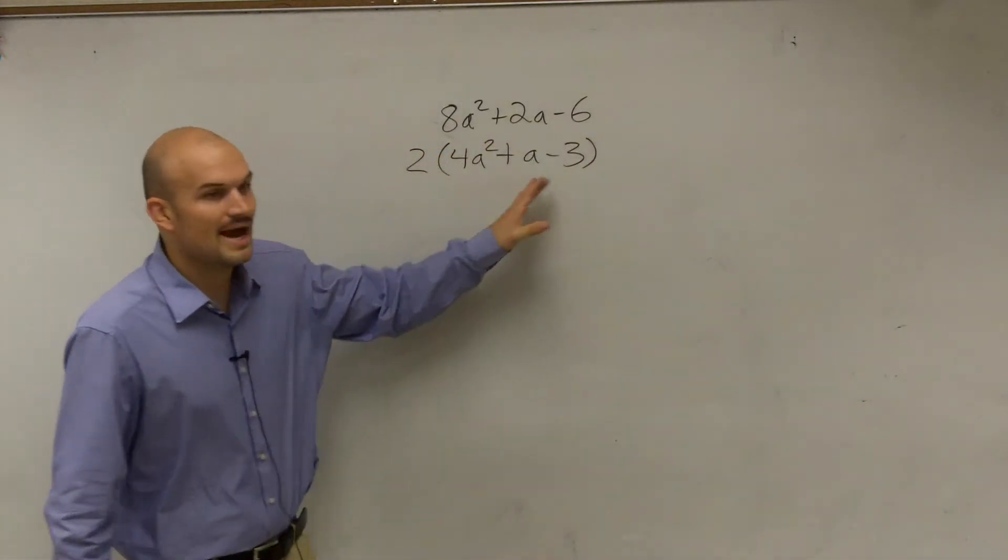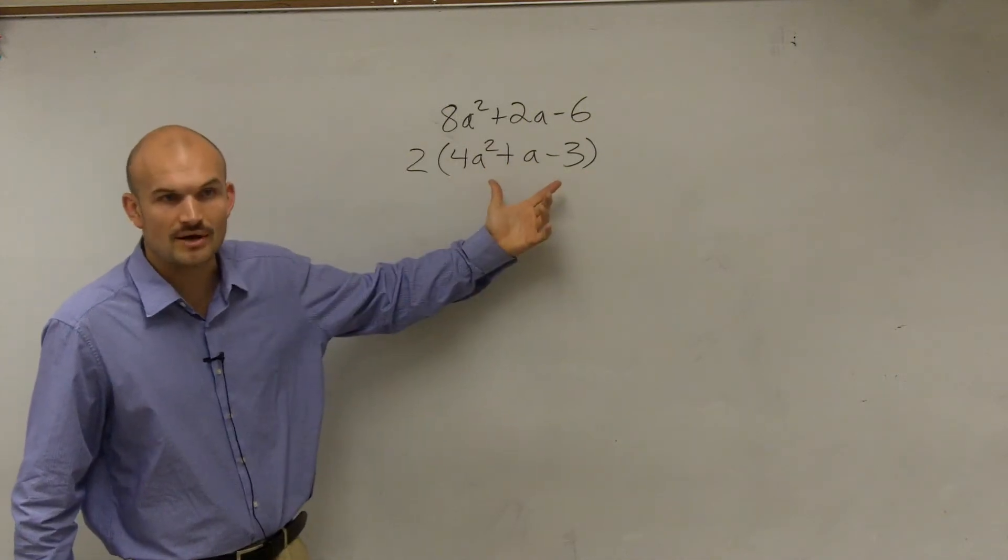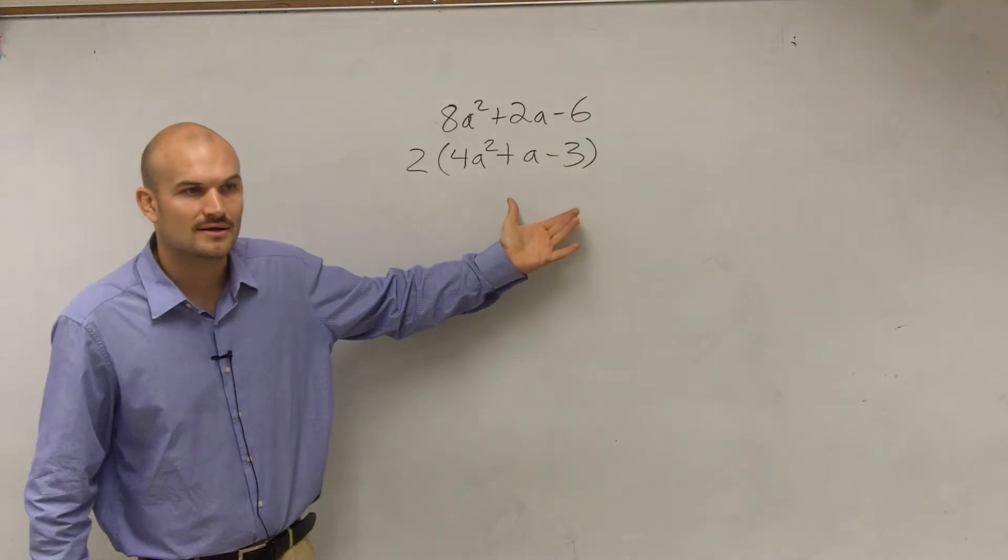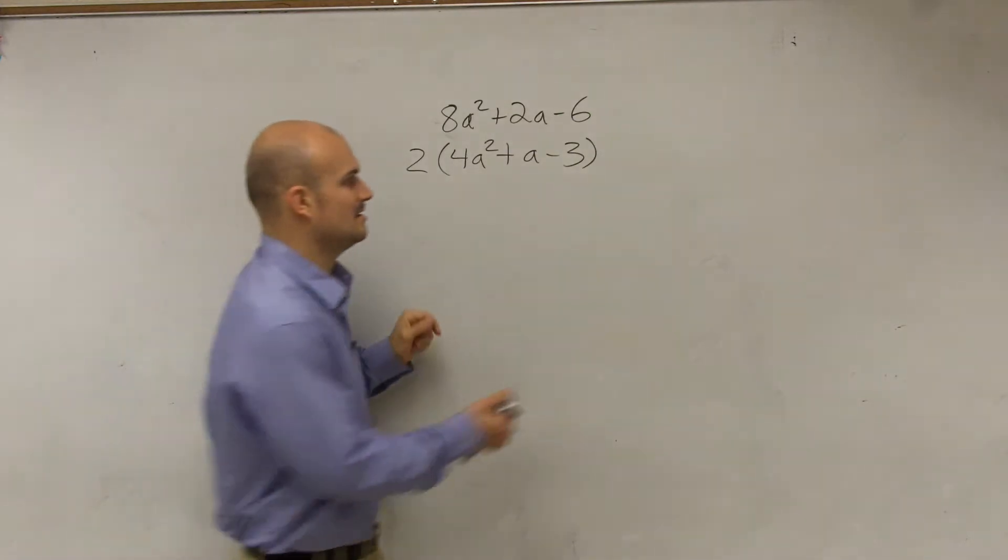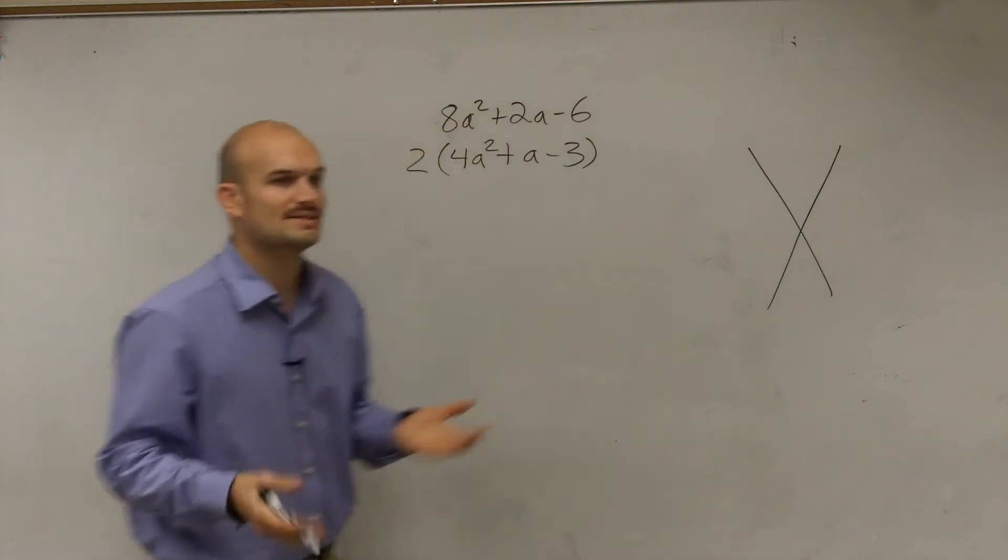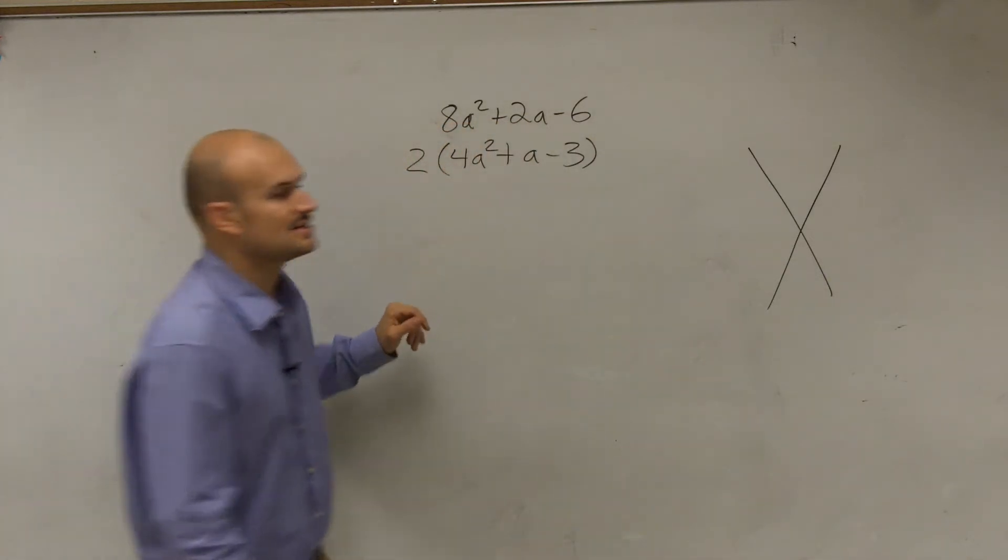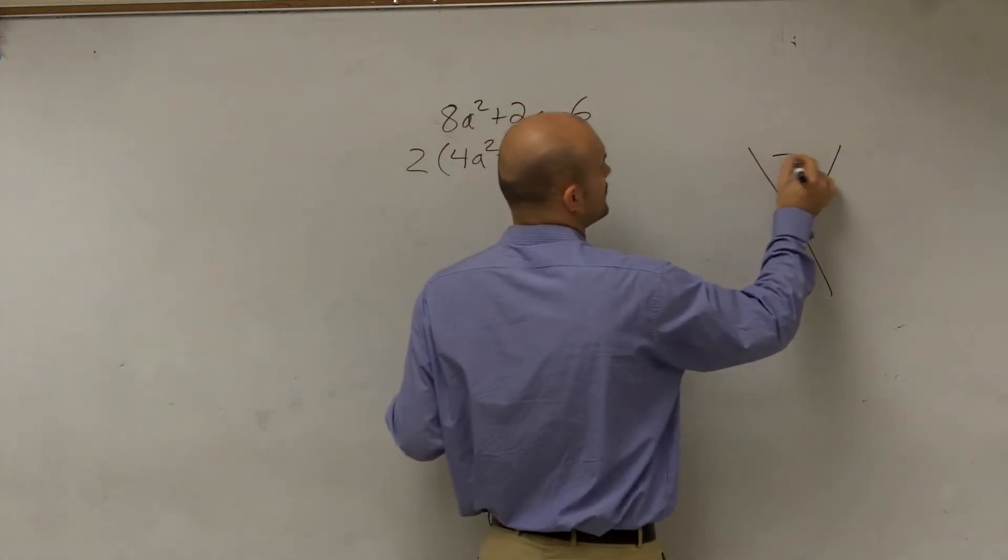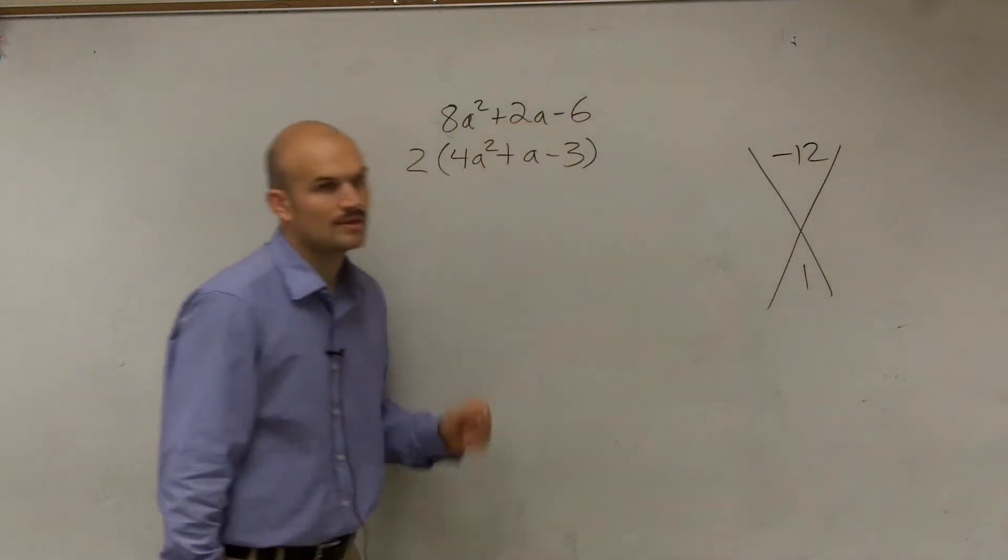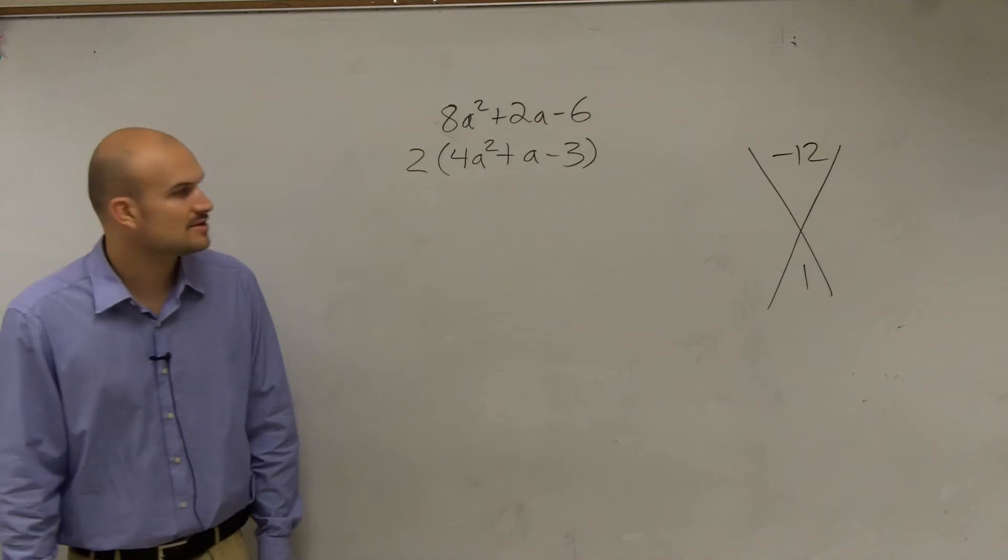So therefore, now I look at this, and I say there's nothing else I can factor out, but how can I factor this? Now again, I'm just going to go back to the AC method. AC is going to be 4 times negative 3, which is negative 12, and then 1. So then I look down on my factors for negative 12.